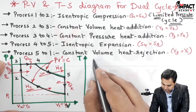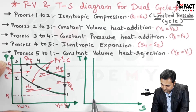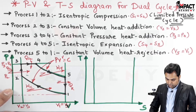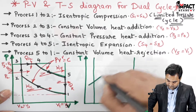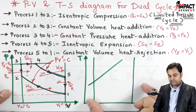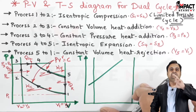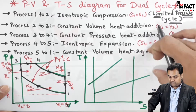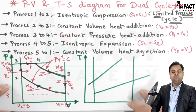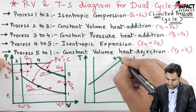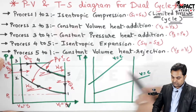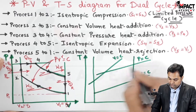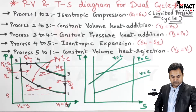Now starting with the TS diagram. Here also, first draw two light vertical lines. After that, draw a constant volume line — it should be light. Similarly, draw another constant volume line; constant volume lines are of diverging nature, meaning the area goes on increasing. Then draw a constant pressure line, which would be less inclined than the constant volume line. So V equals C lines are the constant volume lines, and constant pressure lines are less inclined than the constant volume lines. Now joining all the points.